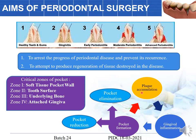Once gingivitis sets in it progresses to the next stage, and if not corrected, leads to pocket formation. If the patient has plaque accumulation and corrects it, they go back to healthy status; otherwise gingival inflammation sets in. At that stage we can help by scaling and root cleaning. If untreated, it progresses to pocket formation, which can be corrected by pocket elimination or pocket reduction procedures. If left to an advanced form, it results in loss of the tooth.